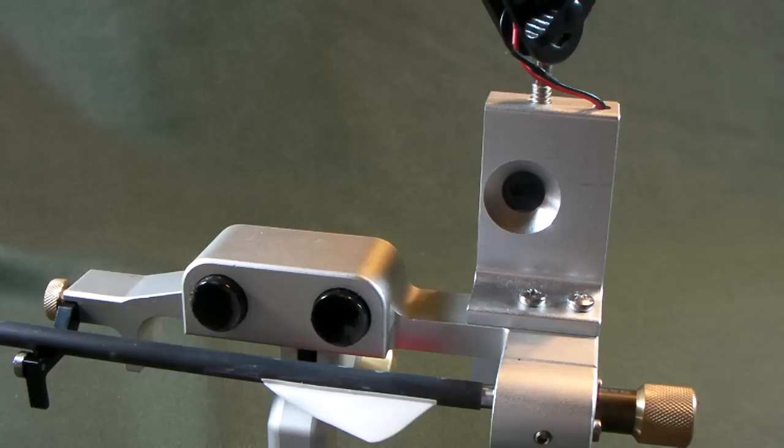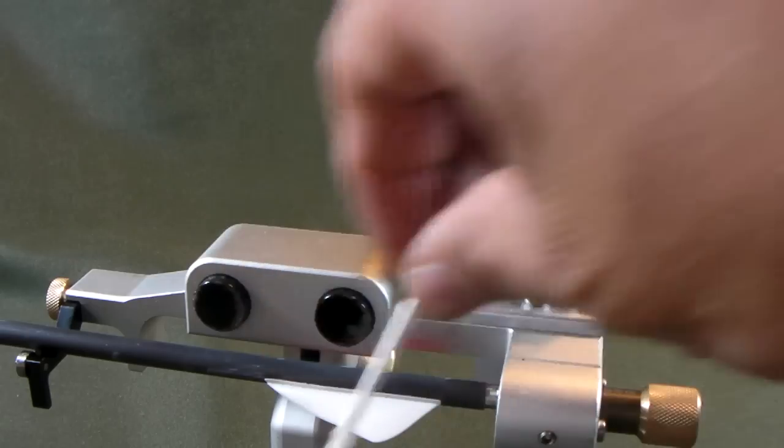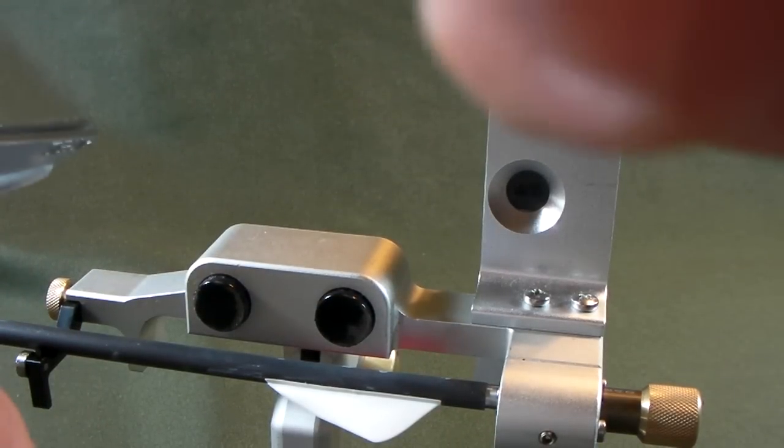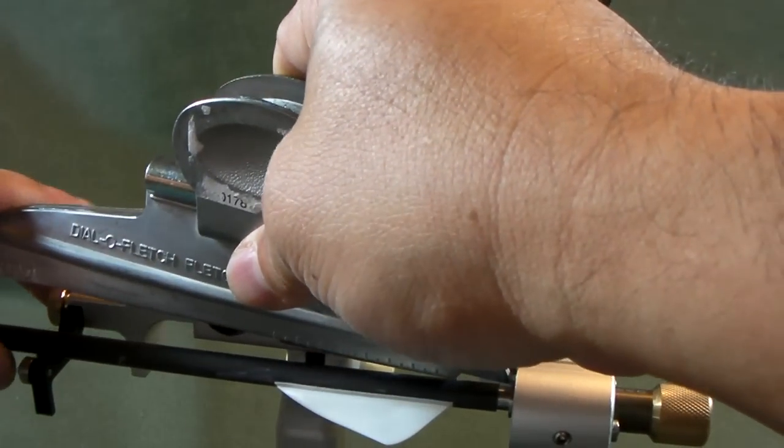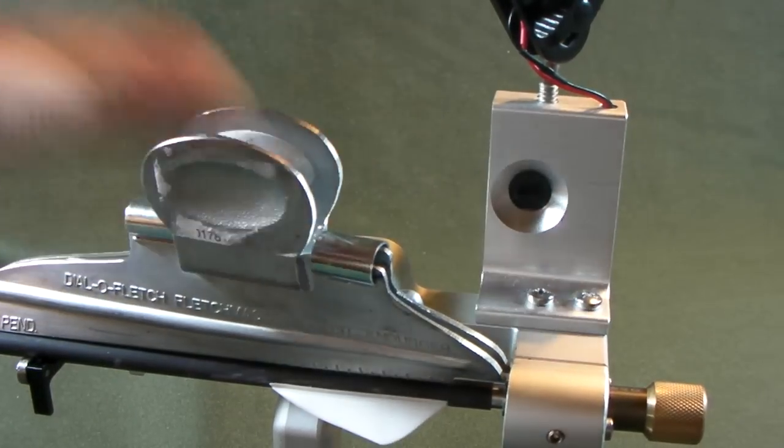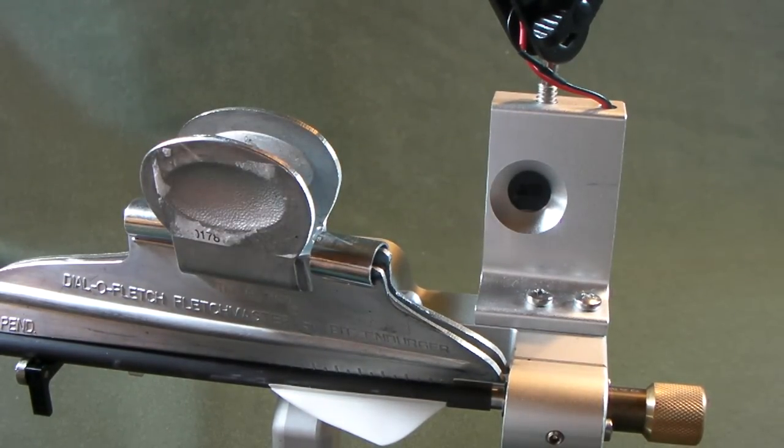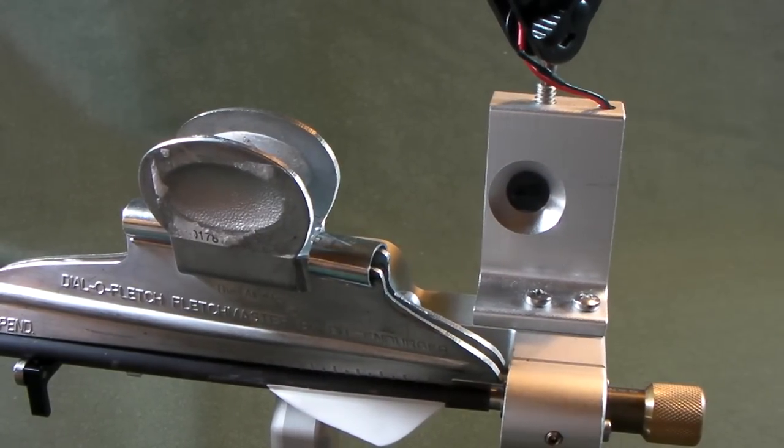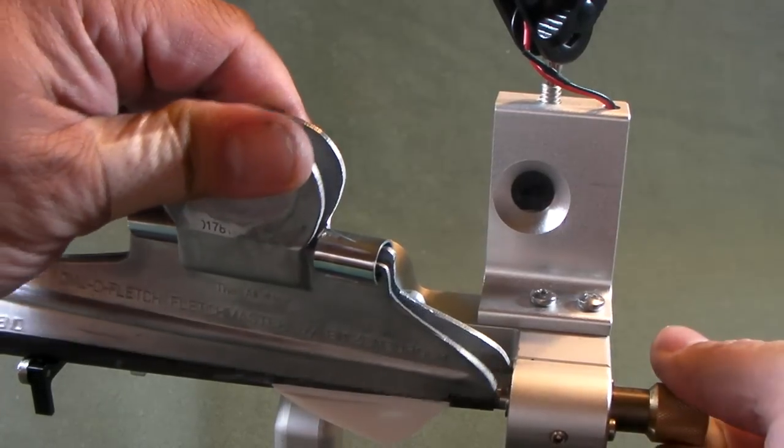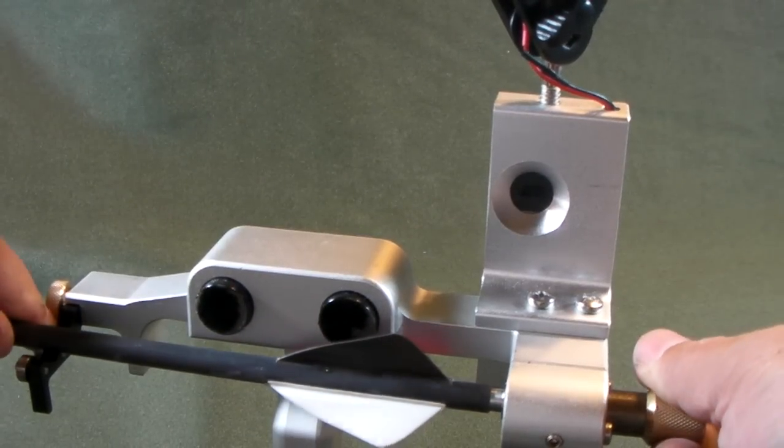Now the third one. Dip in the acetone. Wipe. Dry. Glue. And then we apply. You open the clamp. You rotate. And all three is done.